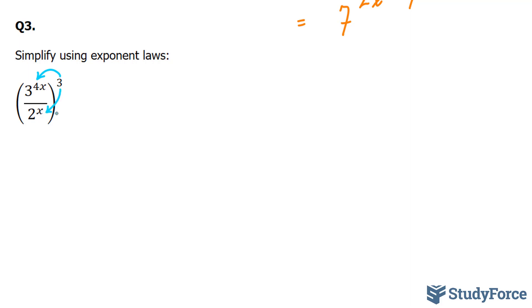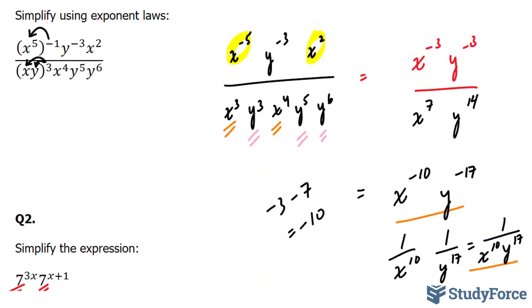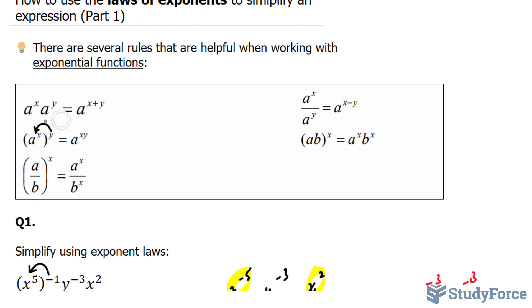So here's what I mean. 3 to the power of 4x to the power of 3 and 2x to the power of 3. To do this, you're going to use this rule right here, which suggests that if you have a power to a power, they multiply.